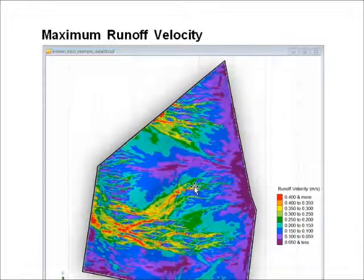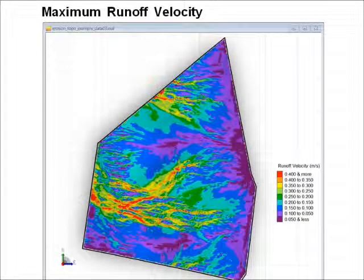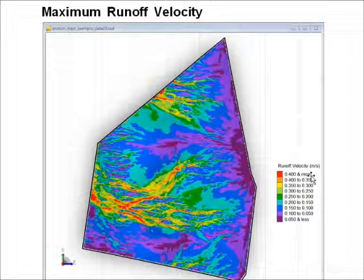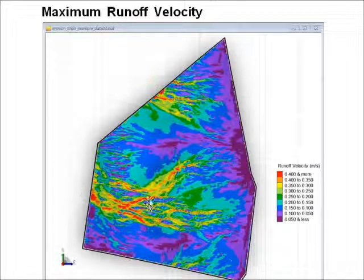This is our primary result, which is useful for looking at erosion. We have a maximum runoff velocity during the rainfall event. The red areas show runoff velocities greater than 0.4 of a metre per second, which is getting up towards velocities that cause significant real erosion. So you can see there are quite a few areas where the runoff is concentrated and we're getting those type of velocities on both sides of this ridge.